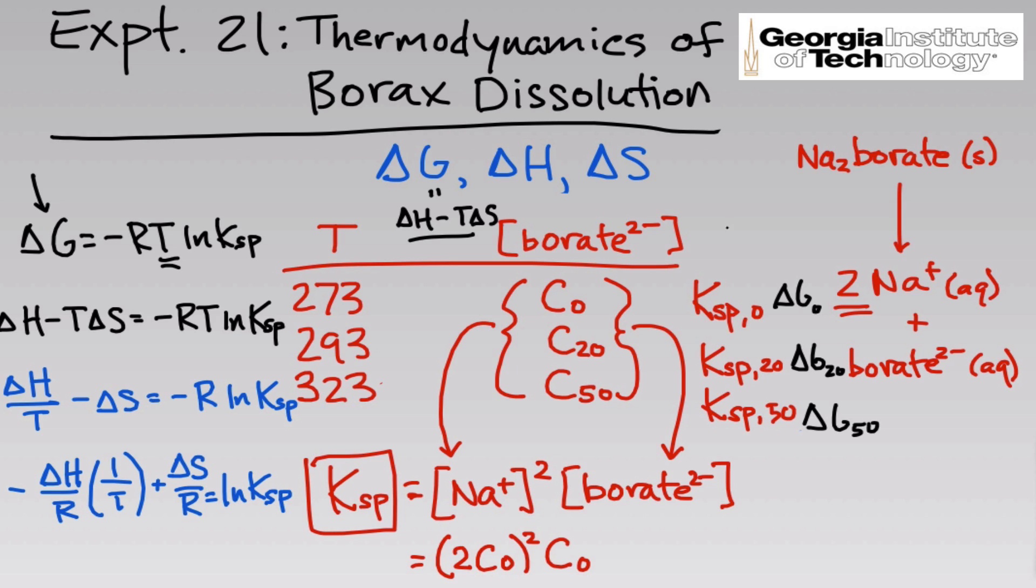If you stare at that for a moment, you'll realize that that's the equation of a line, provided we treat as the X and Y variables. Let's treat the natural log of Ksp as the Y variable and one over T as the X. The slope will be negative delta H over R, and the Y intercept will be this delta S over R. So to determine delta H and delta S, all we need to do is take these Ksp values, take their natural logs, plot those versus one over the temperatures. That should give a line. R squared will be pretty good. And the slope and intercept of that line give you delta H and delta S directly.